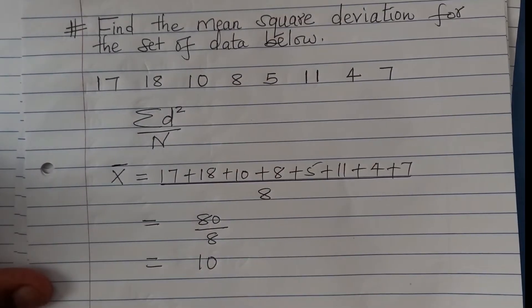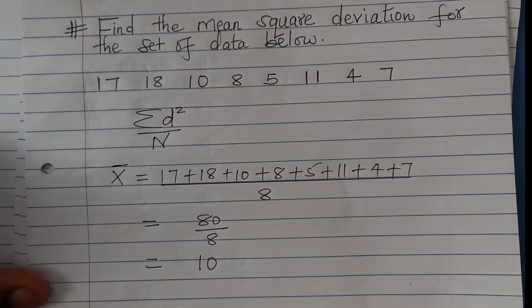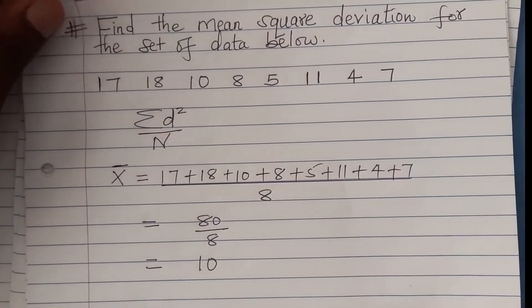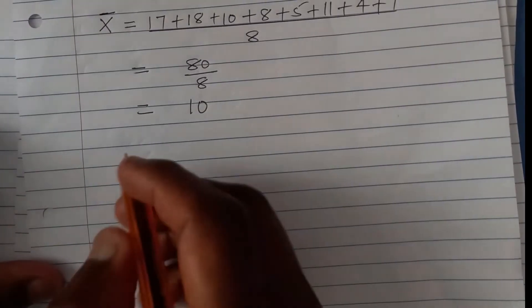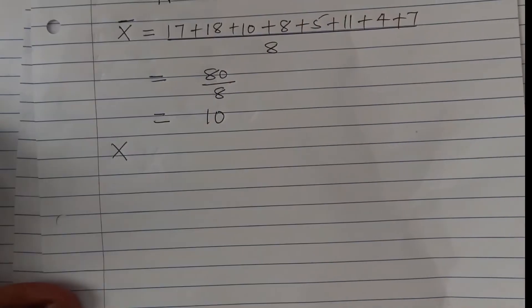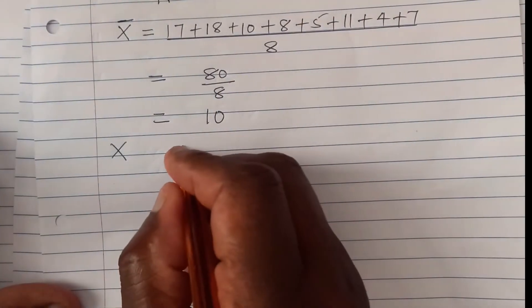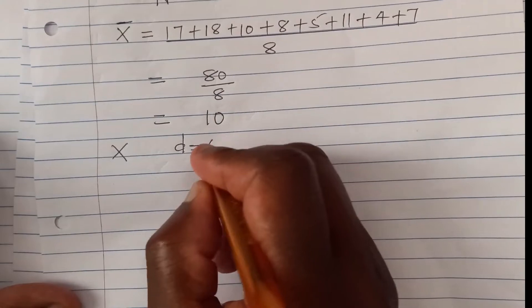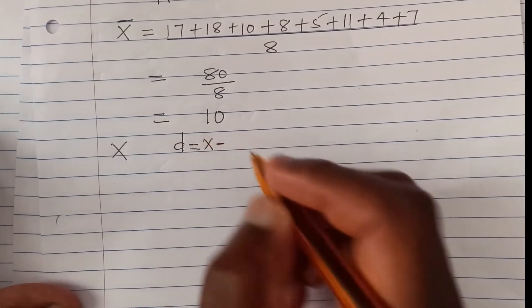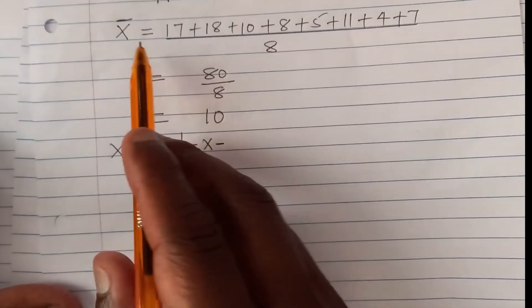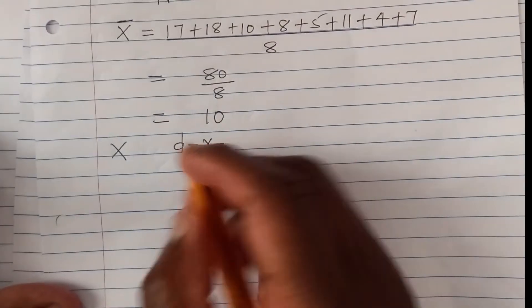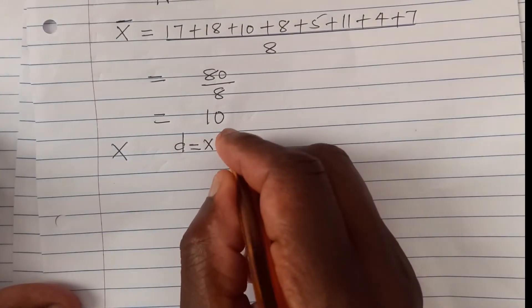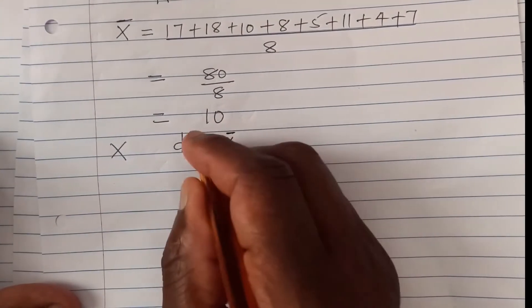Now, after getting the mean, we can get the deviation from the mean. And to do that, I'm going to prepare a table here where we'll have x there, and then we'll have the deviation or d. Deviation will be given by x minus the actual mean, x minus mean, that is x bar. So that is d.